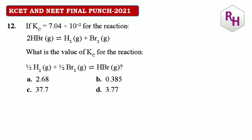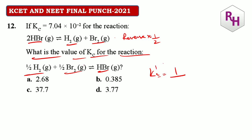12th question: if Kc = 7.04×10⁻² for the reaction 2HBr → H2 + Br2, what is the value of Kc for the half reaction: HBr → ½H2 + ½Br2? For the half reaction, Kc' = √(1/Kc) = 1/√(7.04×10⁻²). Taking the square root: √(7×10⁻²) ≈ 0.265. So Kc' = 1/0.265 ≈ 3.77. The answer is approximately 3.8.